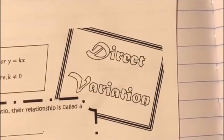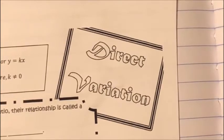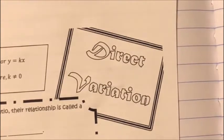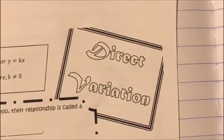Hi, this is Chapter 1, Lesson 9, Direct Variation for Gryffindor Math. This is actually our last lesson in Chapter 1, and we've been talking about constant rate of change and slope in our last two lessons. Direct variation is very similar to slope and constant rate of change. In fact, it's almost exactly the same thing.